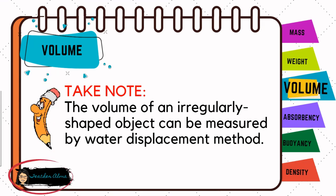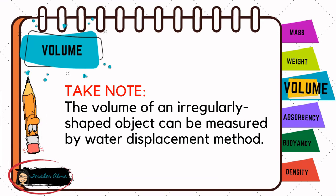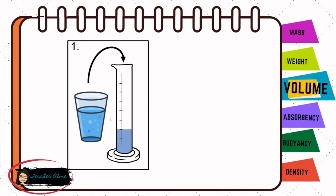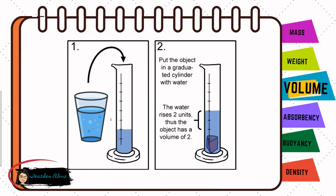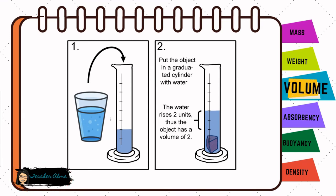How is the water displacement method done? Add water to a graduated cylinder. Note the volume of the water by reading the water level in the cylinder. Submerge the irregularly shaped object in the water. Because the object and water cannot share the same space, the water is displaced or moved upward. Note the new volume of the water with the object in it. Subtract the volume of the water before you added the object from the volume of the water and the object together. The result is the volume of the irregularly shaped object.